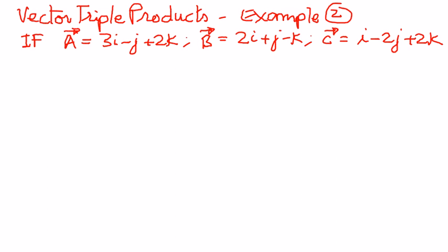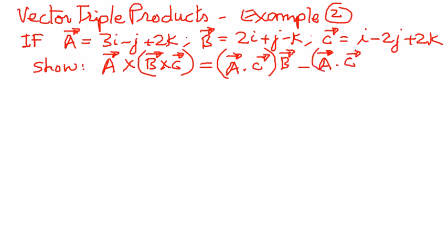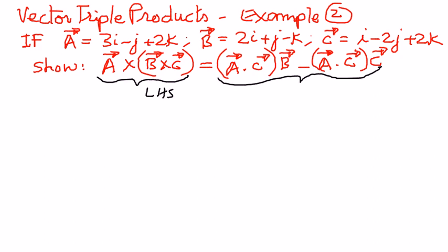We want to show that one of the properties of vector triple products is true. That property is: vector a cross (vector b cross c) equals (vector a dot vector c) times vector b, minus (vector a dot vector b) times vector c. We will call this the left-hand side and the right-hand side of the expression, substitute the given vector components, and prove the property is true.